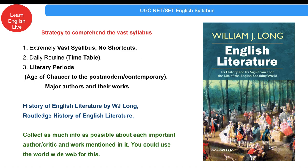Start with the Age of Chaucer — Canterbury Tales is very important here — then the Age of Revival when the printing press arrived, then the Elizabethan Age with prose writers like Bacon and Shakespeare and Christopher Marlowe. Next is the Jacobean period, then Caroline period with metaphysical poets and Caroline poets, then Commonwealth literature, then the Restoration period.